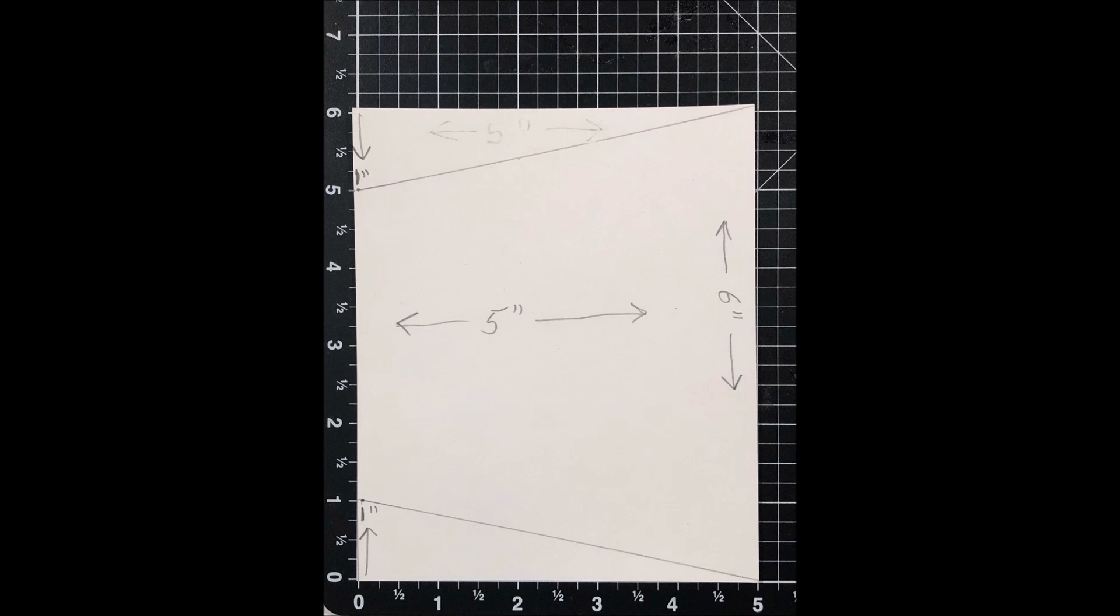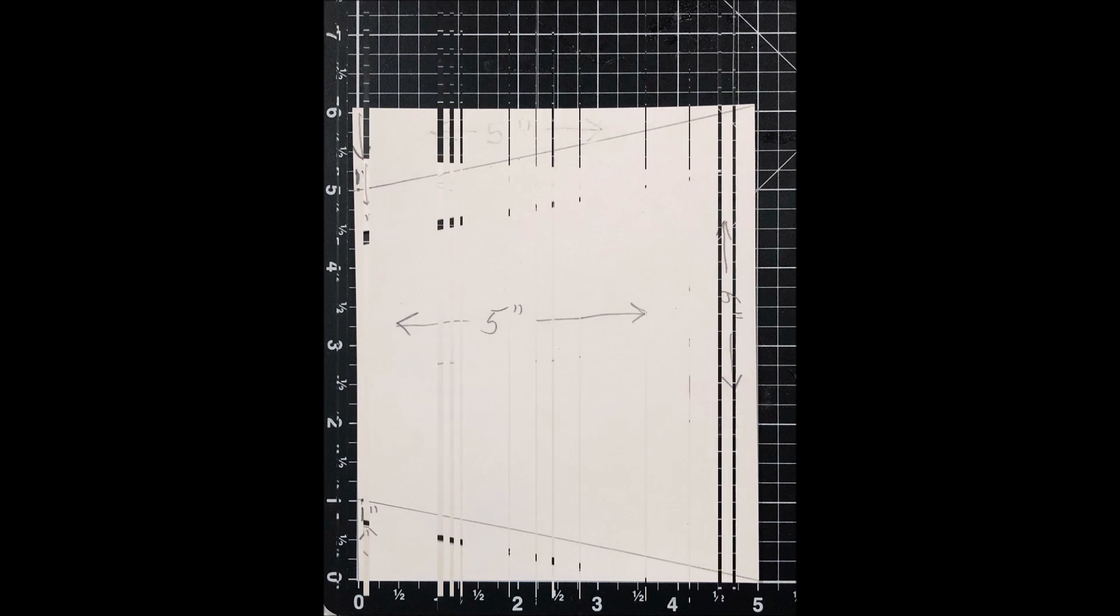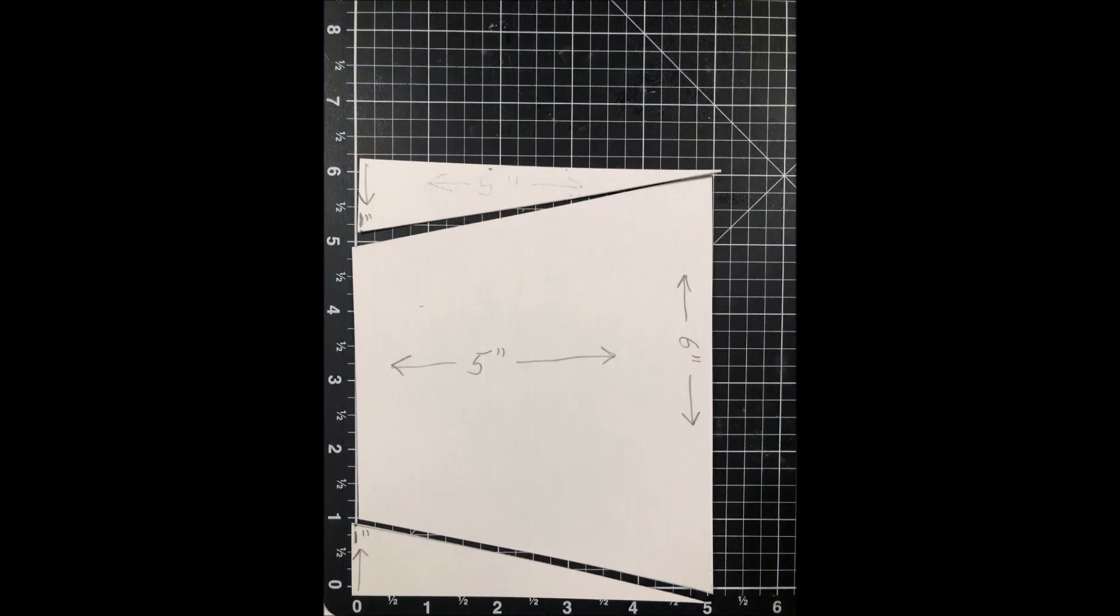As you can see, I've cut a piece of cardboard to be five inches across and six inches tall. You'll also notice that I measured down one inch and up one inch on the one side and have drawn a line from the corner to those one inch marks, and what you're going to do is just cut them off.